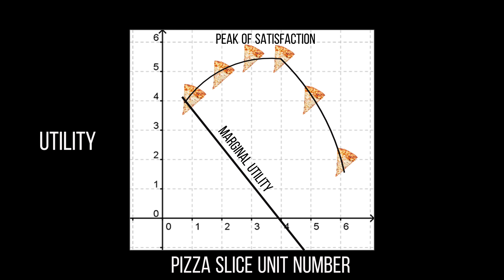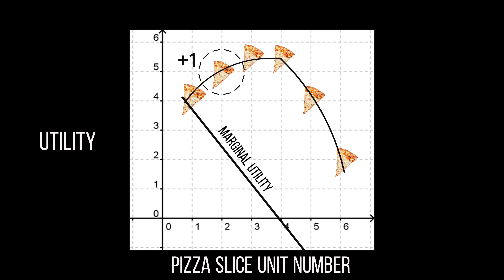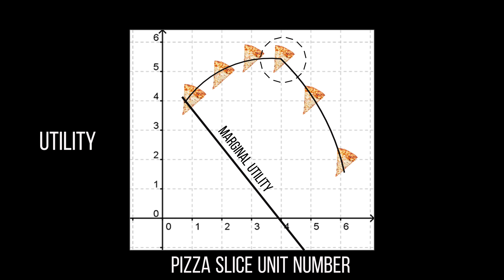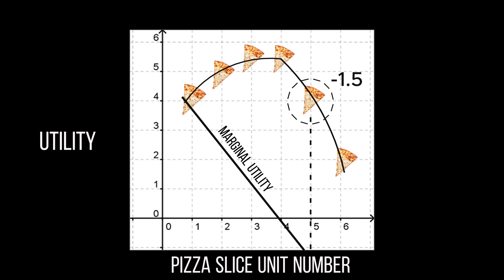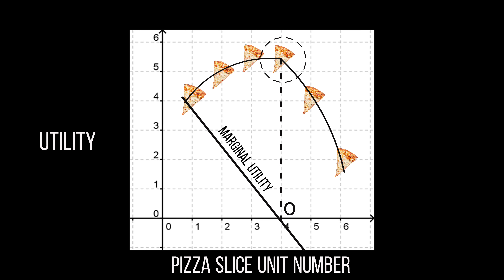The first slice gave a satisfaction rating of four — pretty good. The second gave a satisfaction rating of five, so one additional satisfaction level. The third slice was our peak satisfaction at five point five, only half a satisfaction level more than the previous slice. The fourth slice gave the same satisfaction as the third. After that, things turn south — consuming another slice puts marginal utility into the negative. The optimal time to stop grabbing for the next slice is when the marginal utility line reaches zero; an additional slice of pizza will not provide additional satisfaction and can actually do the opposite.